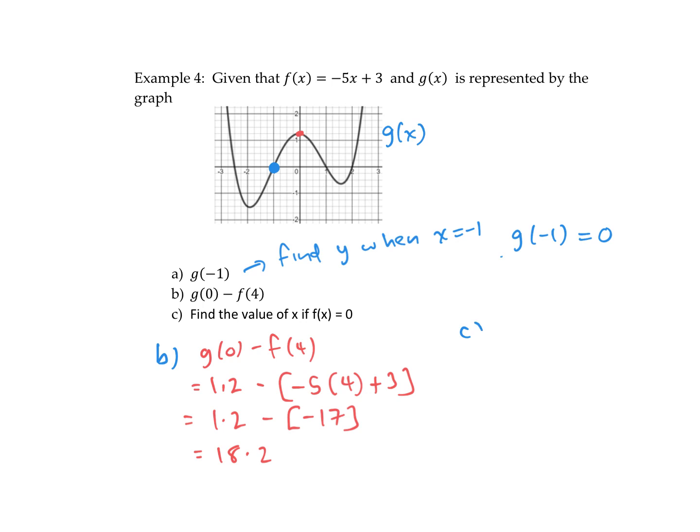And then c is worded a little differently. It says find the value of x if f of x equals 0. So c is asking you to find x when the function is 0 or when y is 0. So if I look at the equation, where is y 0? y has a value of 0 here, here, here, and here. So there are actually four answers when y is 0. So x equals, I'm going to say, negative 2.5. This is just approximate to negative 1, and 1 and 2 when f of x is 0. So just read the question carefully. Is it asking for y or is it asking for x?